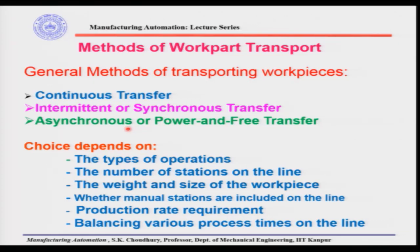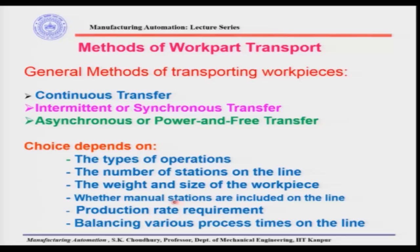Whether manual stations are included on the line is important because if a manual station is included, the processing time can vary — a person may take a little more or less time for the same process. When manual stations are included, synchronous or intermittent transfer will be very difficult to use. In that case, asynchronous or power and free, or continuous transfer, can be used.